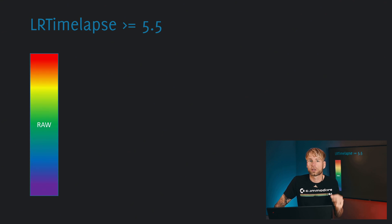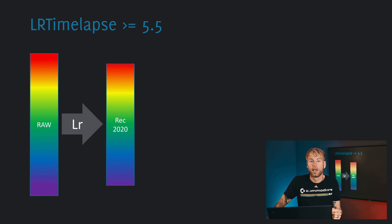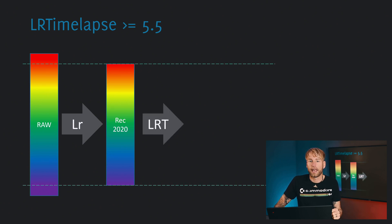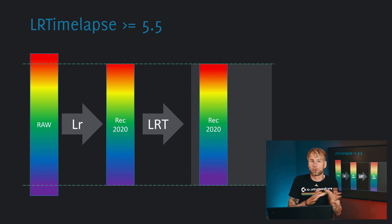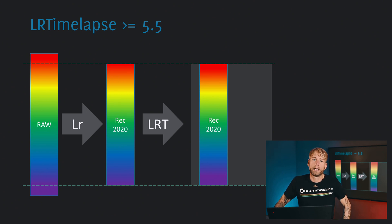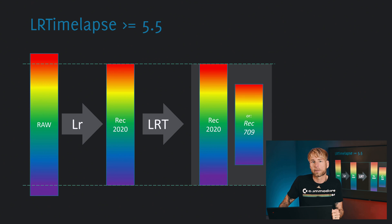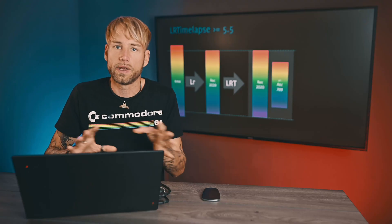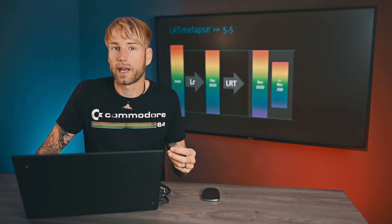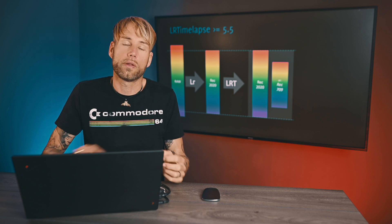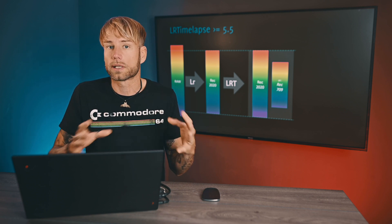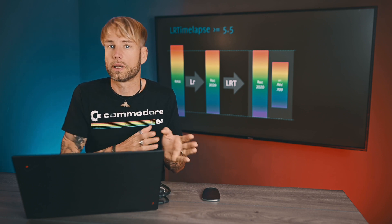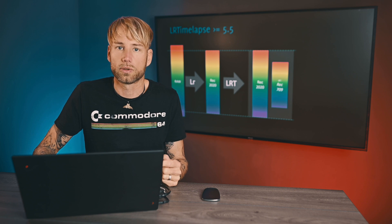In LR Timelapse 5.5, you still edit the keyframes through the whole workflow, but when exporting, we will be exporting in Rec. 2020 right away from the RAW files. That means there won't be any further color space transformation from photo to video — we go from RAW files directly to the video color space Rec. 2020. Then when doing the final render in LR Timelapse, you will have the option either to render in Rec. 2020 or to choose the more common Rec. 709 color space. Those who want to do HDR video editing would benefit greatly from working directly in Rec. 2020 color space and rendering in that space for further editing.